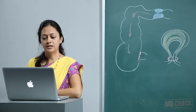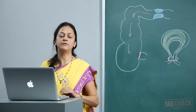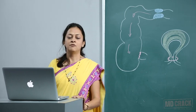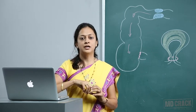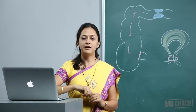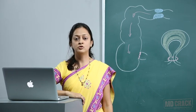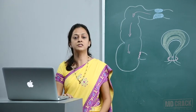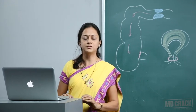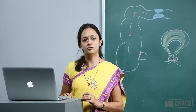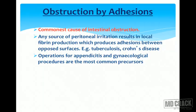Obstruction by adhesions is the commonest type of intestinal obstruction. Around 75% of patients presenting to casualty will be shown to have adhesive obstruction. So whenever asked, the first answer for the commonest cause of obstruction should be adhesive obstruction. Any source of peritoneal irritation results in local fibrin production, which produces adhesions between opposed surfaces.